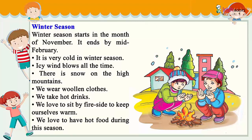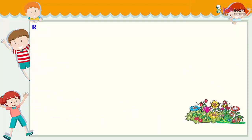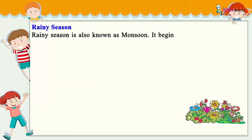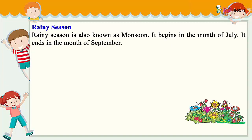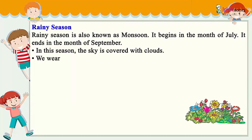Rainy season is also known as monsoon. It begins in the month of July and ends in the month of September. In this season, the sky is covered with clouds. We wear raincoats and carry umbrellas to keep us dry. We sometimes see a rainbow during the rainy season.